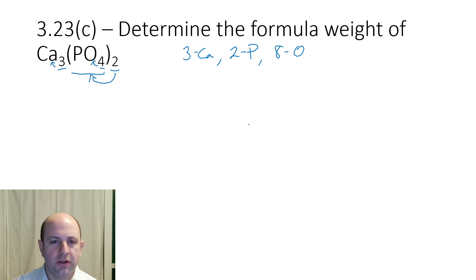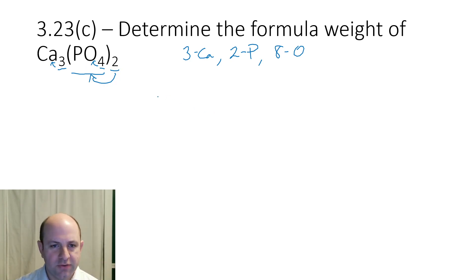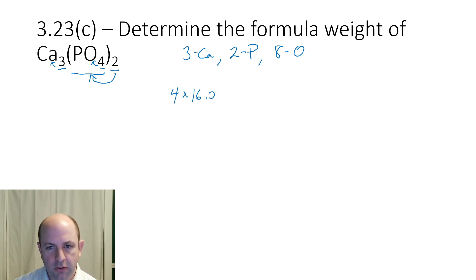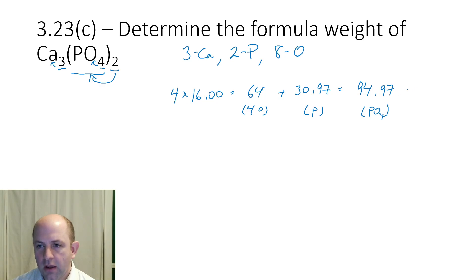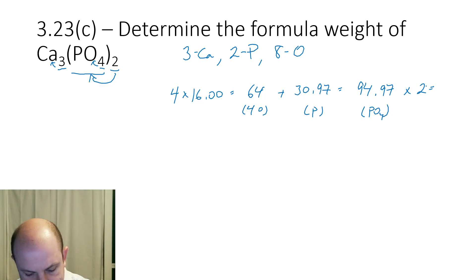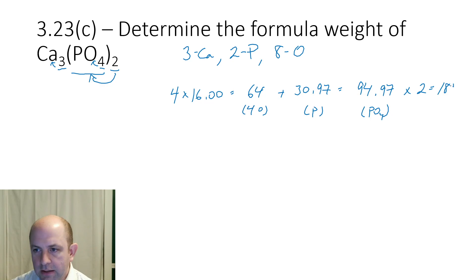The way I like to do it — and I'll show it here on the paper — is I like to put polyatomics together, because then this 2 means whatever I get here, I can just multiply it by 2. So I start with what I can put into my calculator easiest. I'll do 4 times 16.00, which equals 64. Then I'll add the 30.97 from phosphorus, and that gives us 94.97 — so that's the PO4.